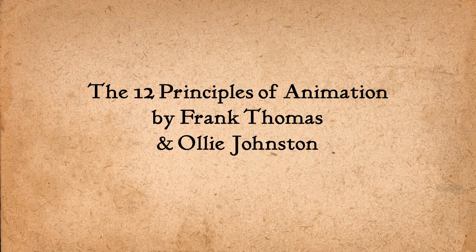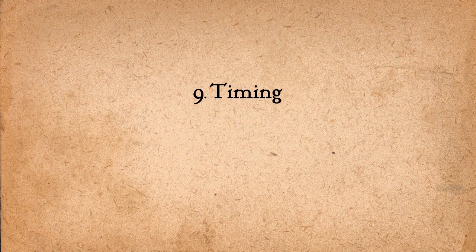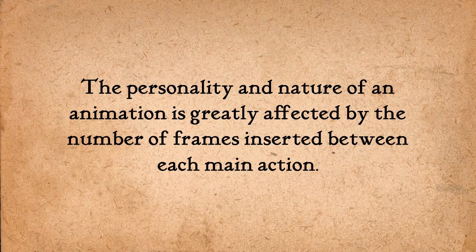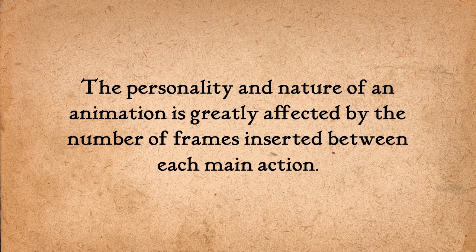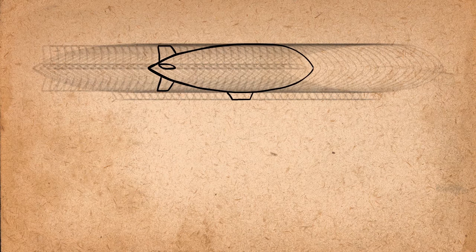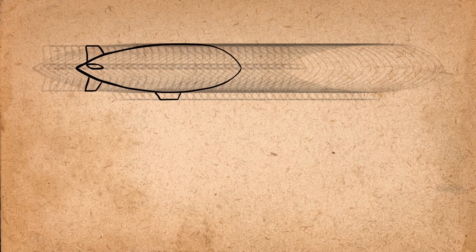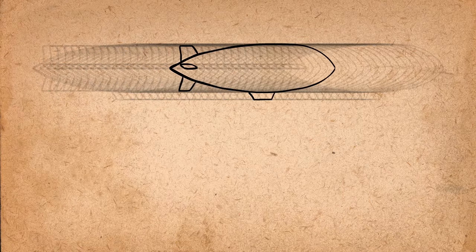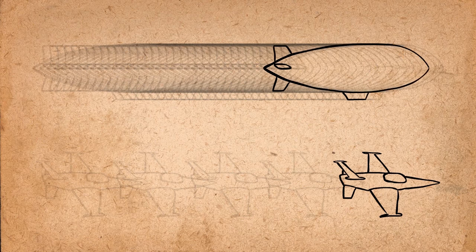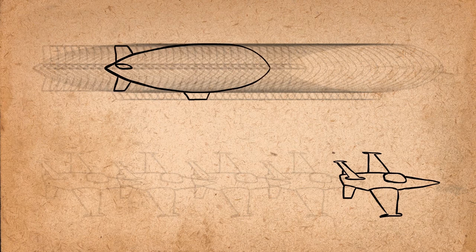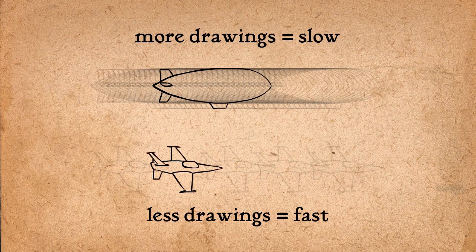So the next principle is called timing. This principle states that the personality and nature of an animation is greatly affected by the number of frames inserted between each main action. Basically, if you have many drawings that are very close together in between the two main poses, the action will be very slow. If you have very few drawings set far apart from each other, the action will be very fast. Less drawings means fast, more drawings means slow.